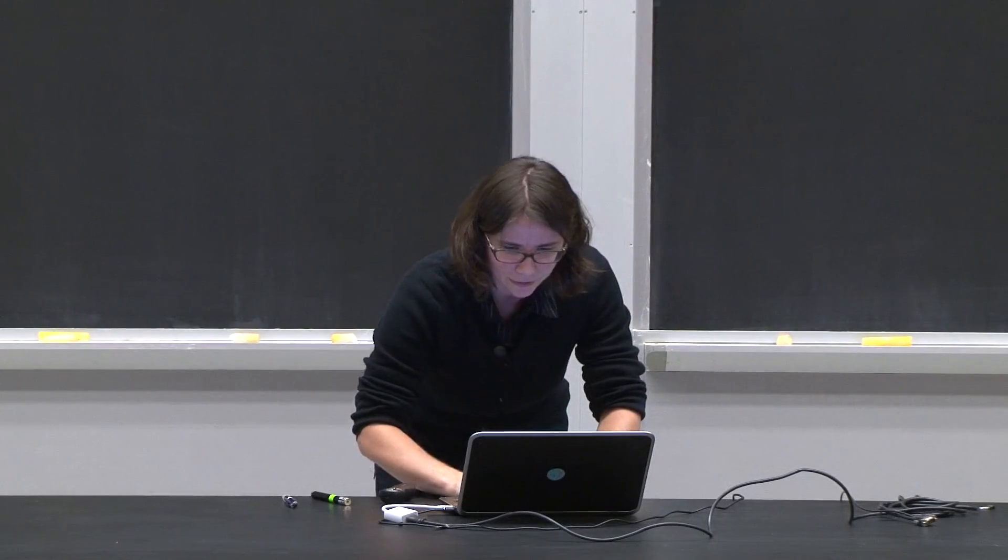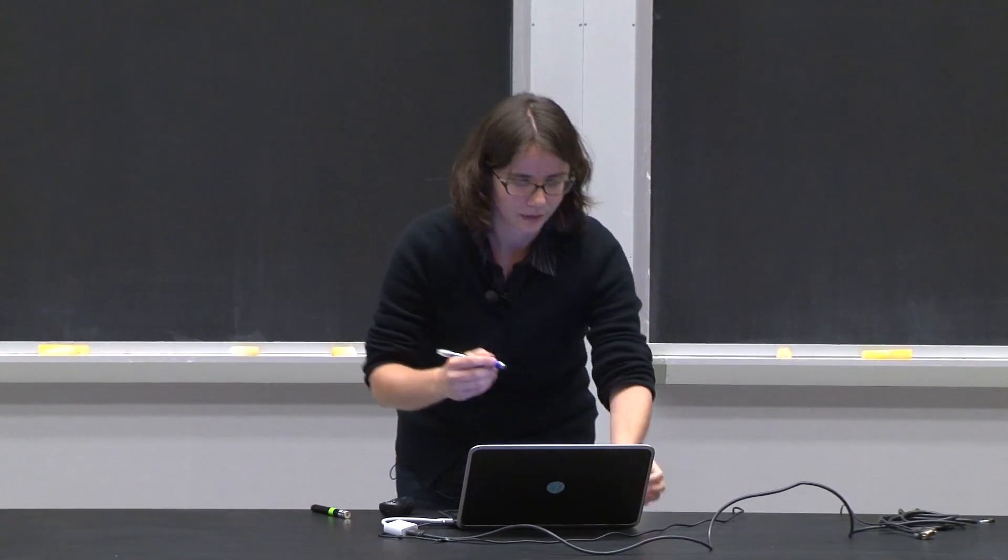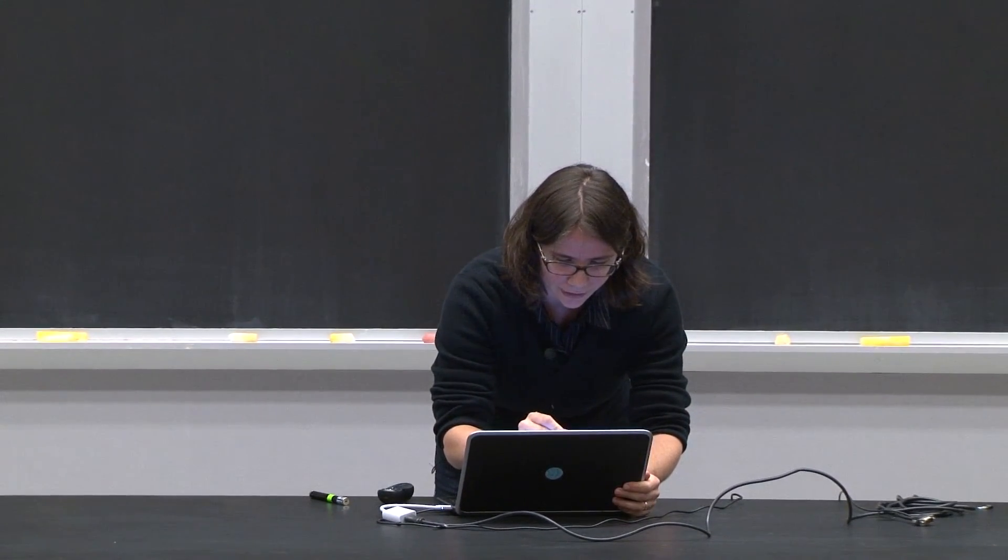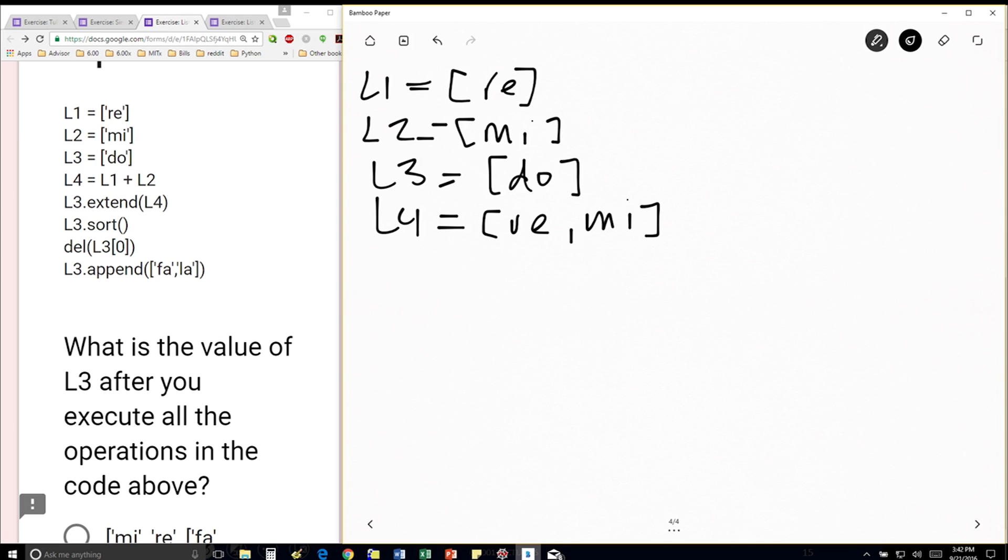Let's walk through it. Here we have three lists. L1 is equal to Ray, L2 is equal to me, L3 is equal to Doe. L4 is equal to, let's just do what it says here, L1 plus L2. So it's going to be the list Ray, me.